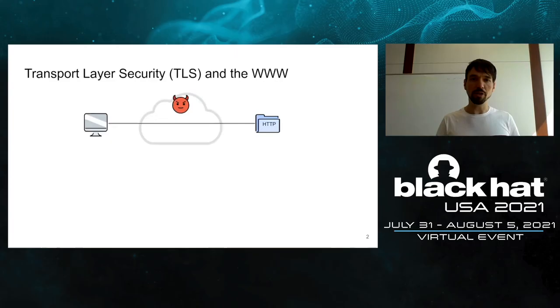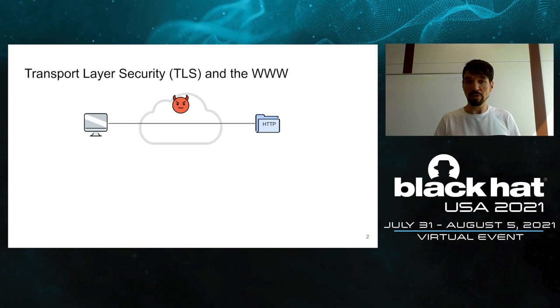Today we are going to talk about transport layer security and attacks on transport layer security. The TLS protocol is the most important cryptographic protocol, which allows us to secure connections — for example, between a browser and a web server. In order to protect connections from man-in-the-middle adversaries, we use transport layer security.